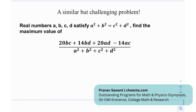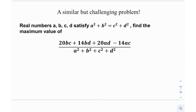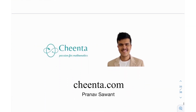At the end we have a similar but challenging problem — a very direct application of Cauchy-Schwarz. It says real numbers a, b, c, and d satisfy a² + b² = c² + d². Find the maximum value of the given expression. The idea is to use Cauchy-Schwarz, so give it a try. If you're able to solve it, let me know. Until then, see you in the next video.